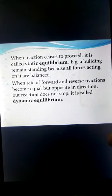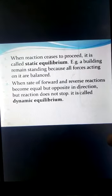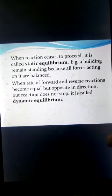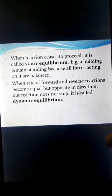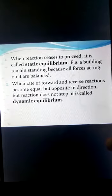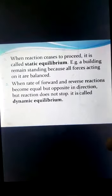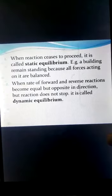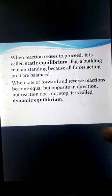In dynamic equilibrium, the rate of forward and reverse reactions become equal, but both reactions continue to occur in opposite directions simultaneously — reactants form products, and at the same time products recombine to form reactants. This type of equilibrium is called dynamic equilibrium.